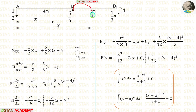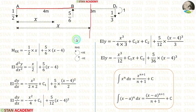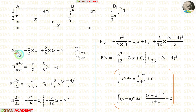RB is acting towards the section in the clockwise direction, so it will be positive. Now we are calculating the moment beyond 4 meters, so we have to consider the second section. The required distance is X minus 4. We have calculated Mxx from two different sections, so both terms should be separated by a dotted line.